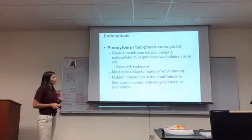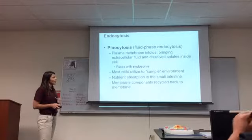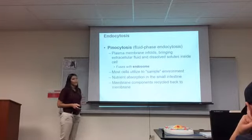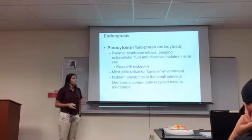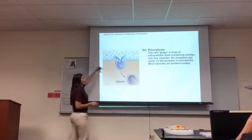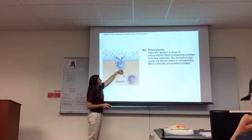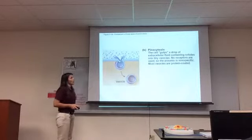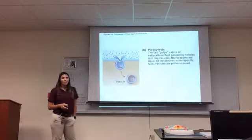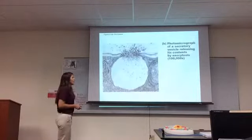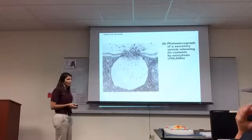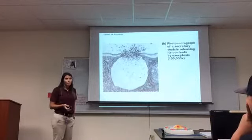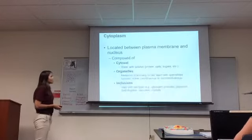Both phagocytosis and pinocytosis are forms of endocytosis. Phagocytosis brings in large particles — cell eating. Pinocytosis brings in just fluids — cellular drinking. This diagram is showing pinocytosis: fluid's coming in, forming a vesicle, and that vesicle is transporting it. Here it is happening on a photomicrograph — an actual picture of it happening in a cell, clearly enlarged for viewing. Now we're done with the plasma membrane.